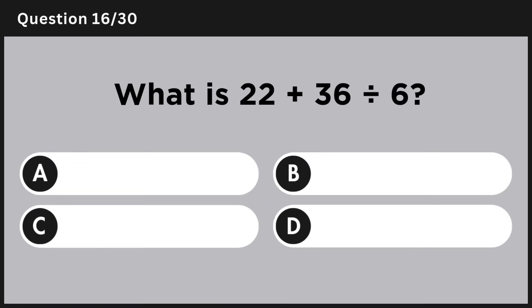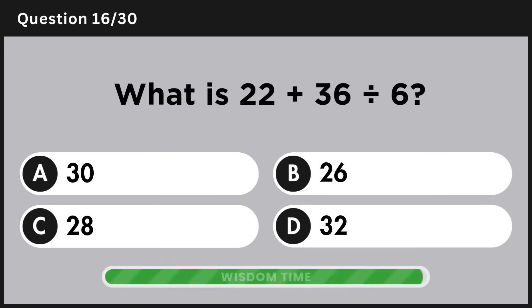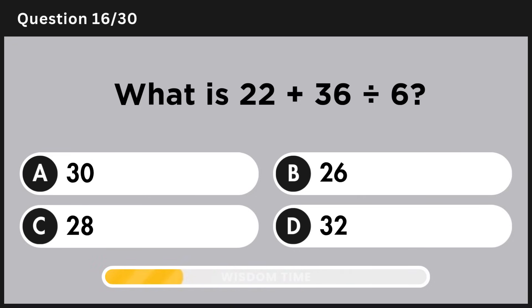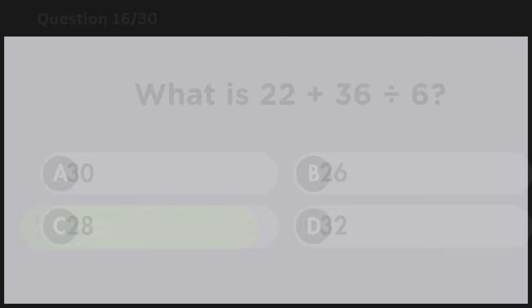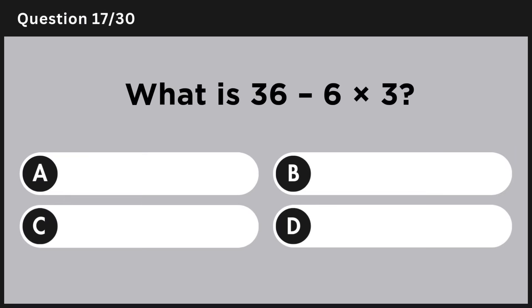What is 22 plus 36 divided by 6? Answer C: 28. What is 36 minus 6 multiplied by 3?